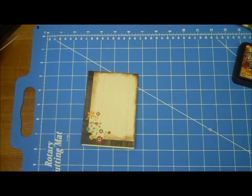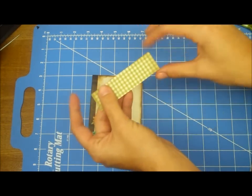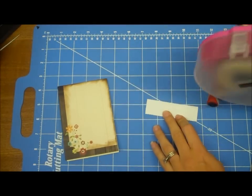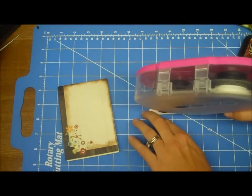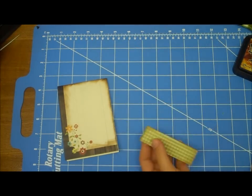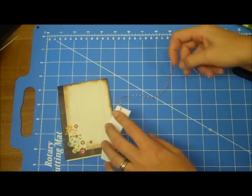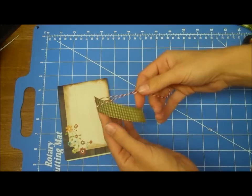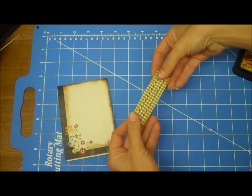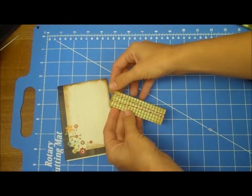Then I took, also from the Harvest Lane collection, this really cute green gingham. And it's just cut at three and a half by one inch. And I'm going to glue it. I'm going to add some glue to this, but I'm not going to glue it down just yet. I'm just going to use the glue to help adhere some red and white baker's twine. And I'm just going to leave it straight instead of twisting it in the front.